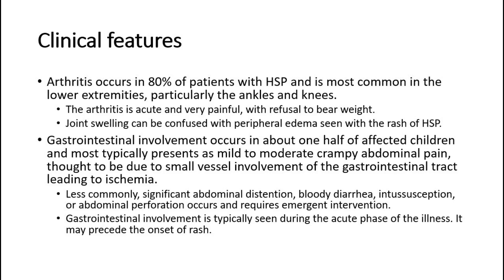Gastrointestinal involvement occurs in about one-half of affected children, and most typically presents as mild to moderate crampy abdominal pain, thought to be due to small vessel involvement of the gastrointestinal tract leading to ischemia. Less commonly, significant abdominal distension, bloody diarrhea, intussusception, or abdominal perforation occurs, and requires emergent intervention. Gastrointestinal involvement is typically seen during the acute phase of the illness and may precede the onset of rash.